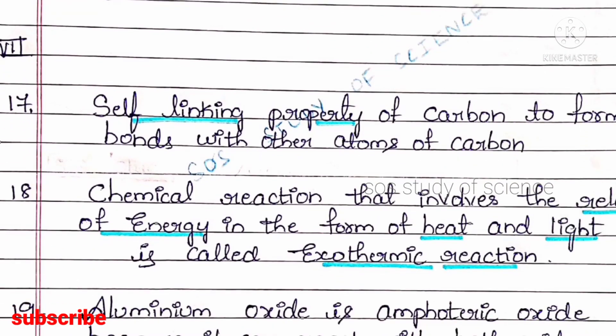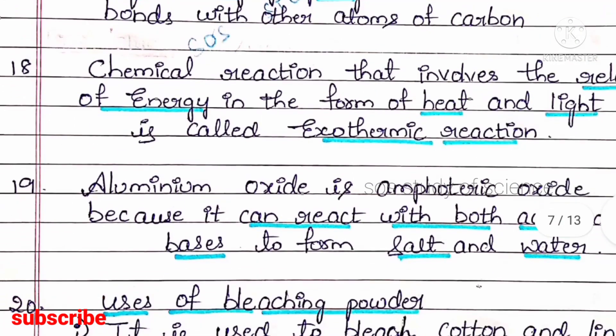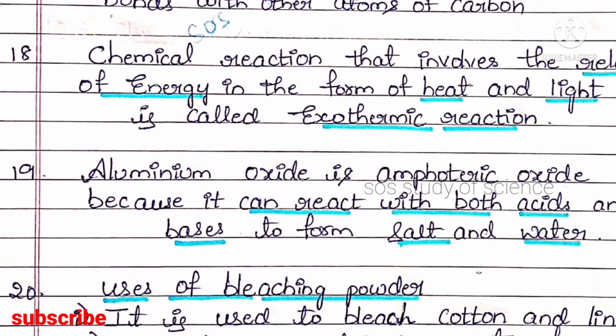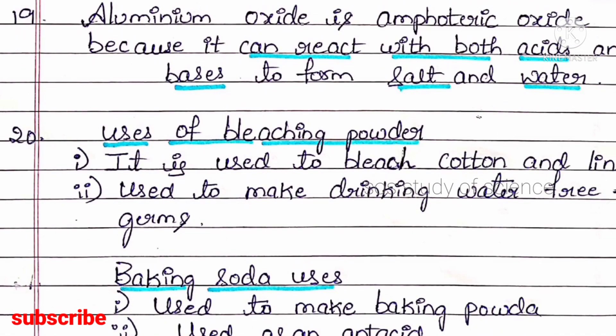Question 17: what is catenation? The right answer is the self-linking property of carbon to form bonds with other atoms of carbon. Question 18: what are exothermic reactions? Chemical reactions that involve the release of energy in the form of heat and light are called exothermic reactions. Question 19: aluminium oxide is called an amphoteric oxide — because aluminium oxide reacts with both acids and bases to form salt and water.